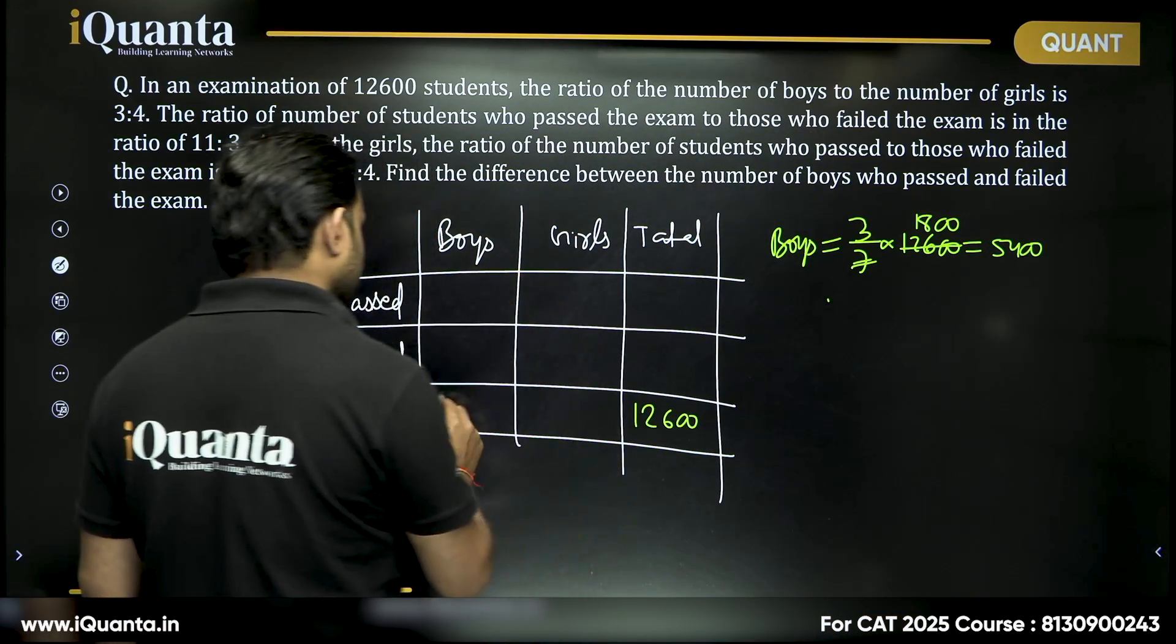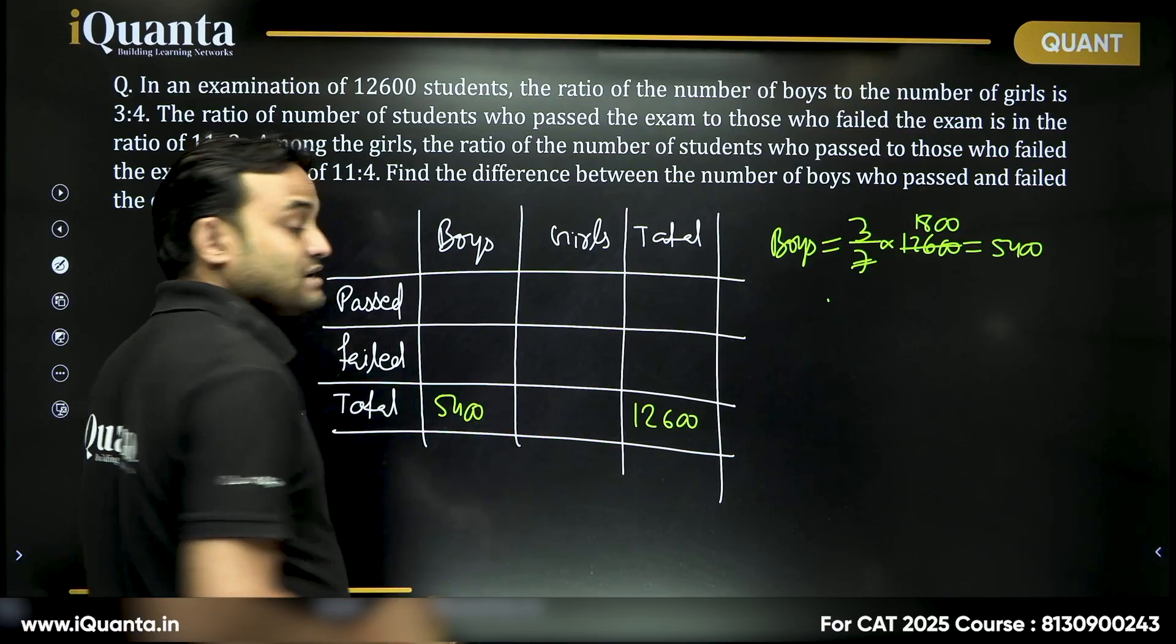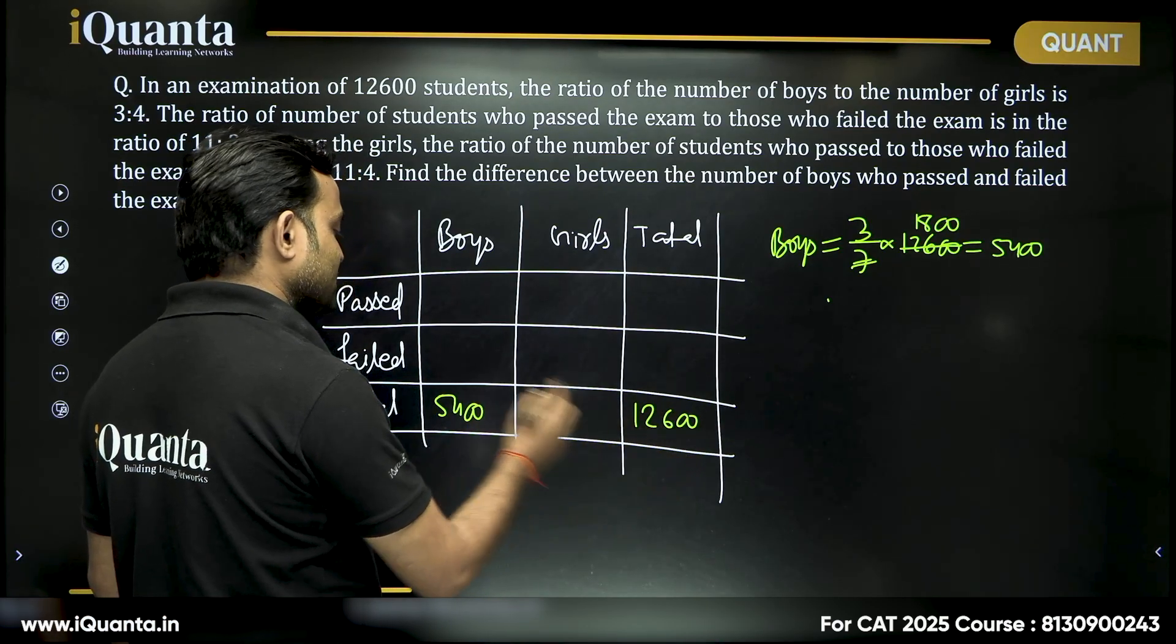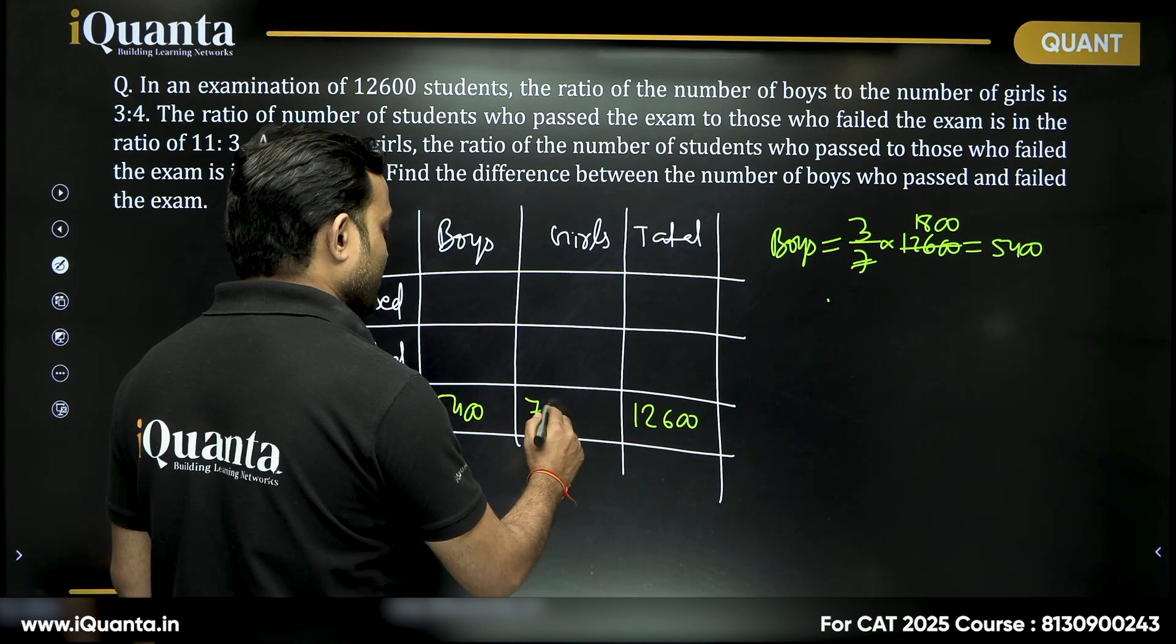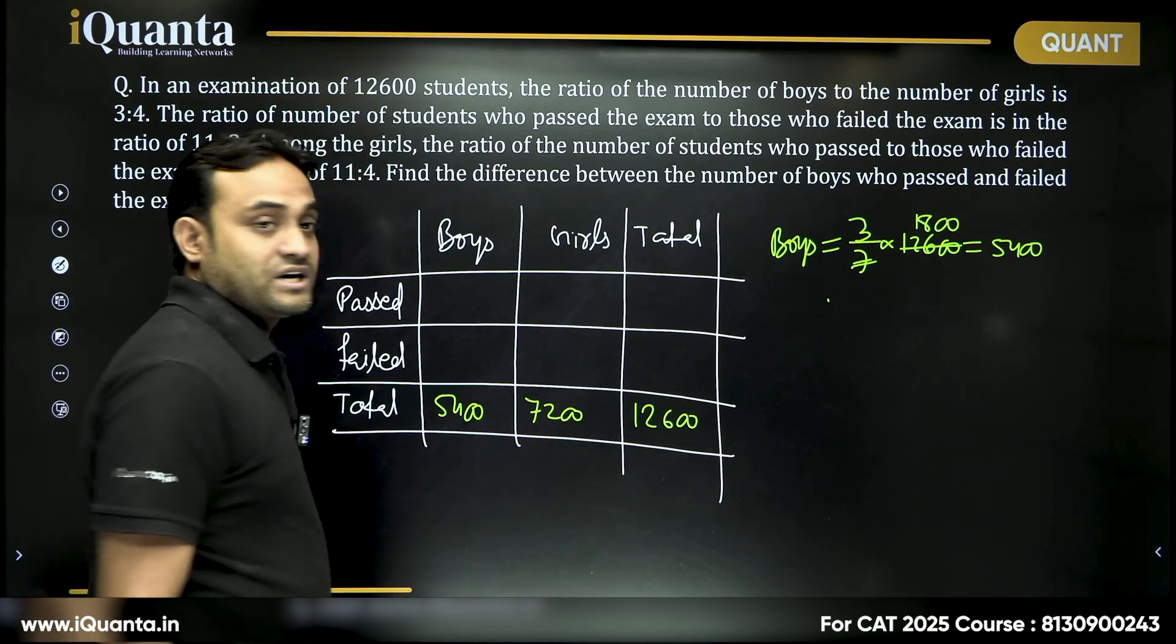So total number of boys 5,400. Rest of them must be girls. So 12,600 minus 5,400, 7,200 are girls.